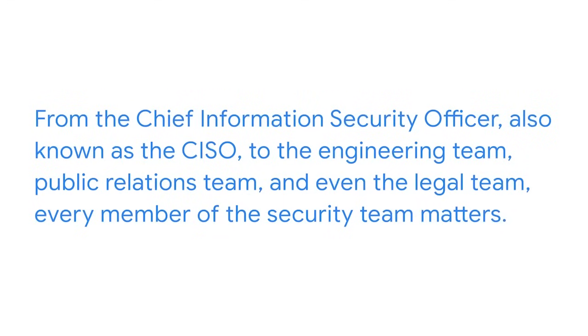Larger organization security teams have many levels, and each level plays a major role in protecting the company's assets and data. However, smaller and medium-sized companies have only one or two people responsible for security. From the chief information security officer, also known as the CISO, to the engineering team, public relations team, and even the legal team, every member of the security team matters. Each team member's role depends on the nature and scope of the incident, as highlighted within a company's escalation process. Even the smallest security incident can become a much larger issue if not addressed.